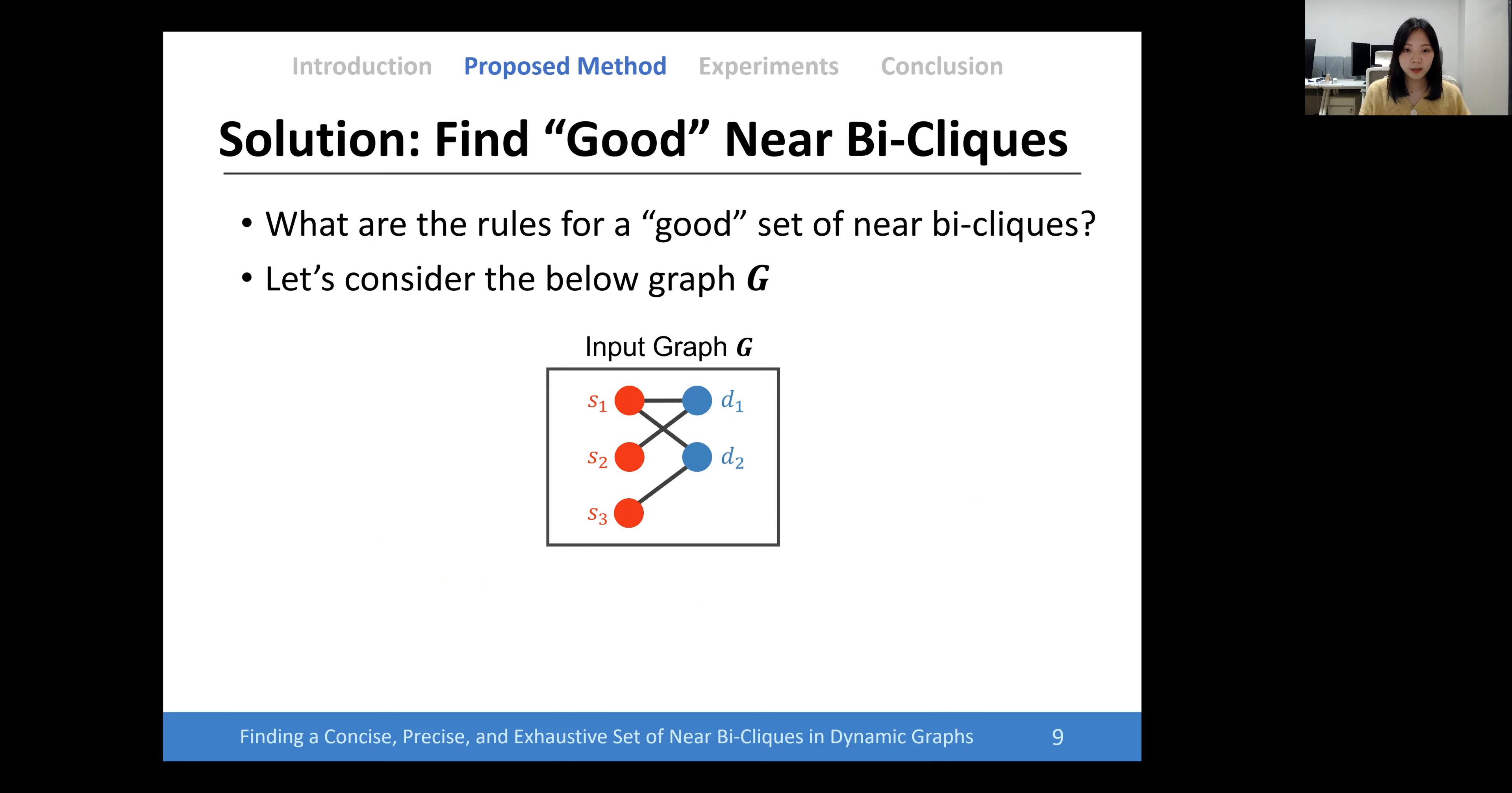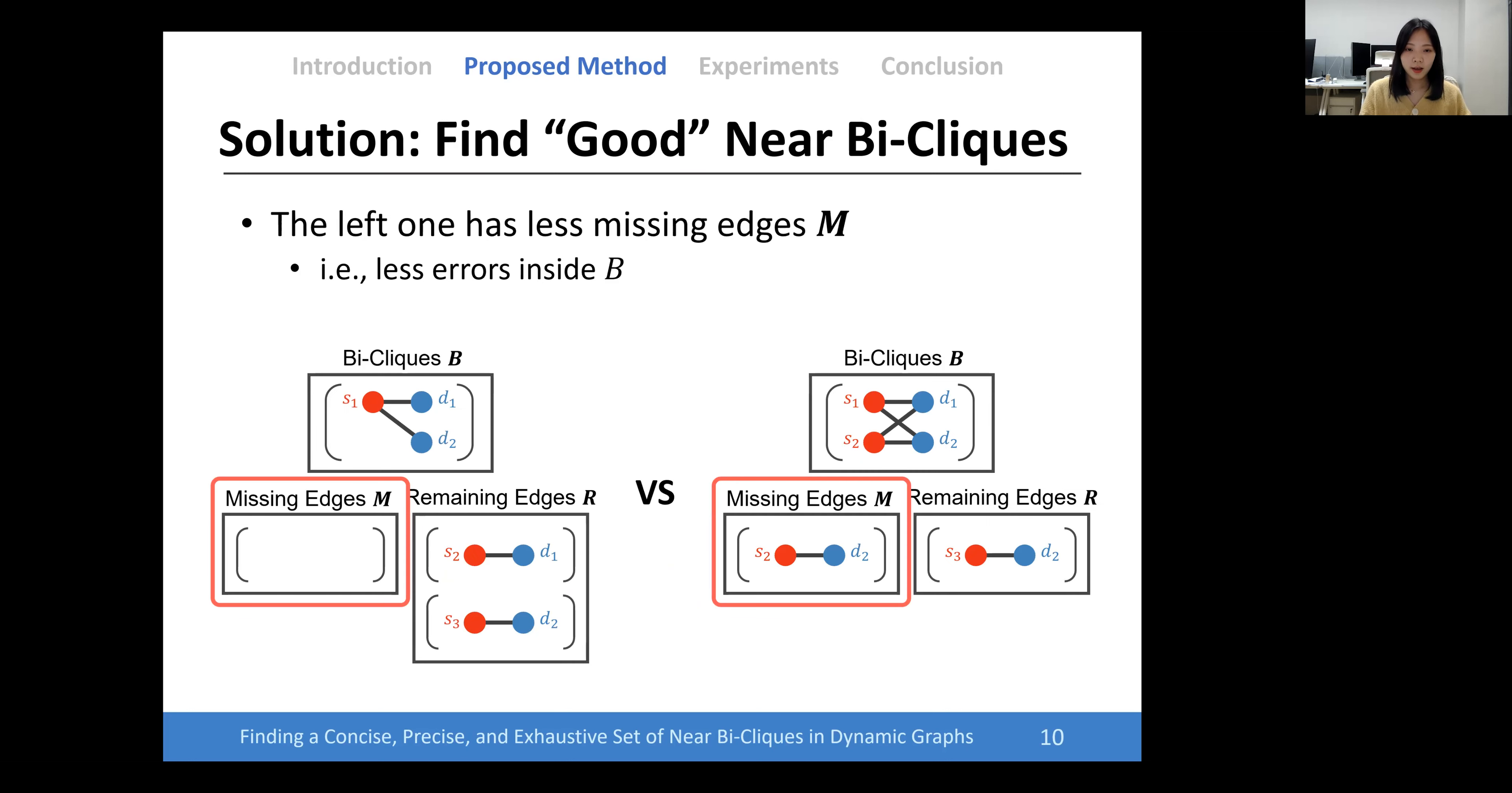So, what is a good set of near bi-cliques in a graph? Let's consider some ways to describe the below graph. Here are two options to describe the previous graph, and the left one has less missing edges.